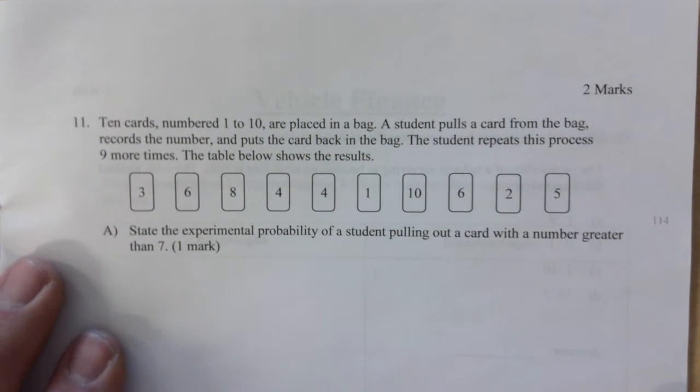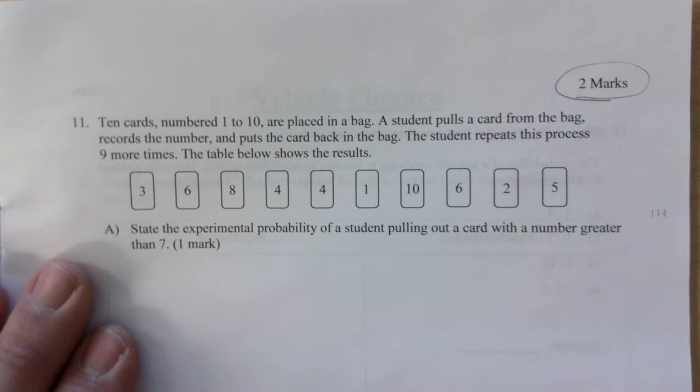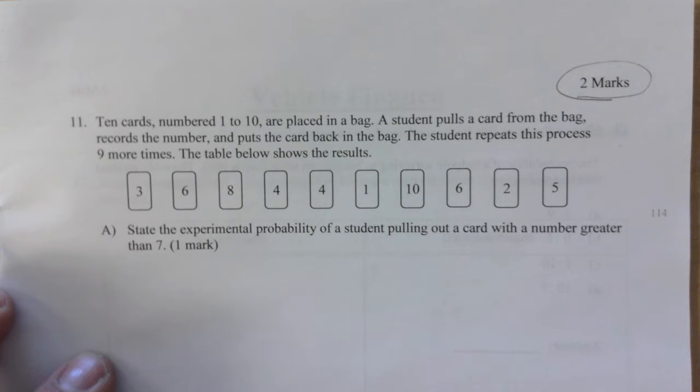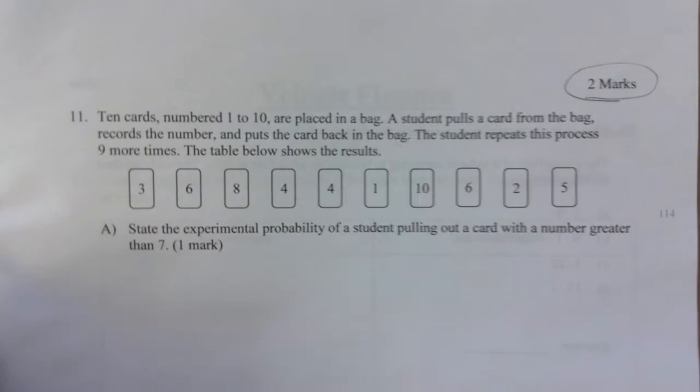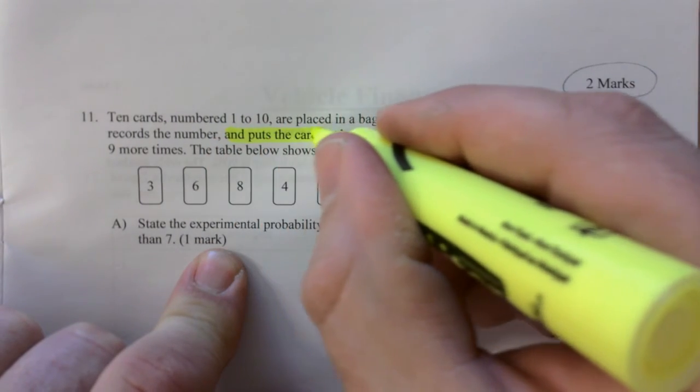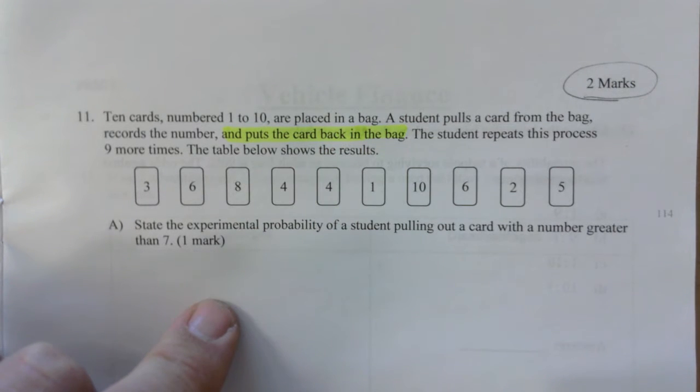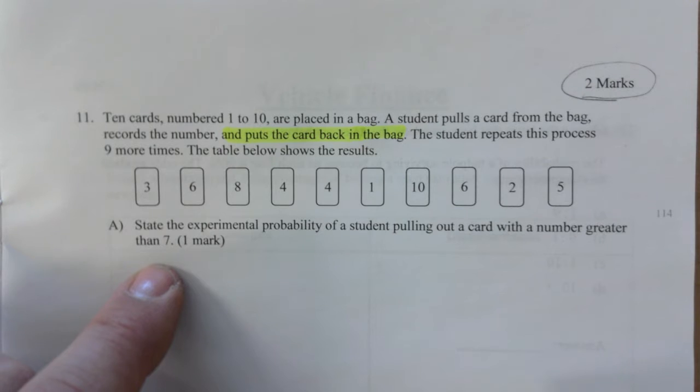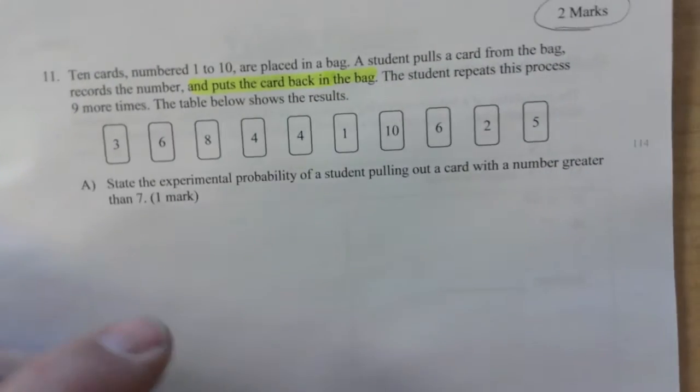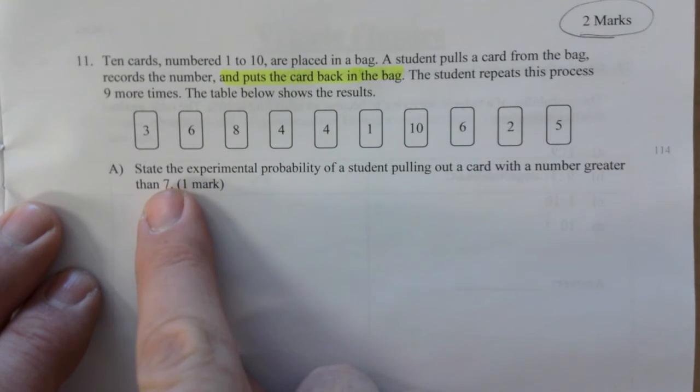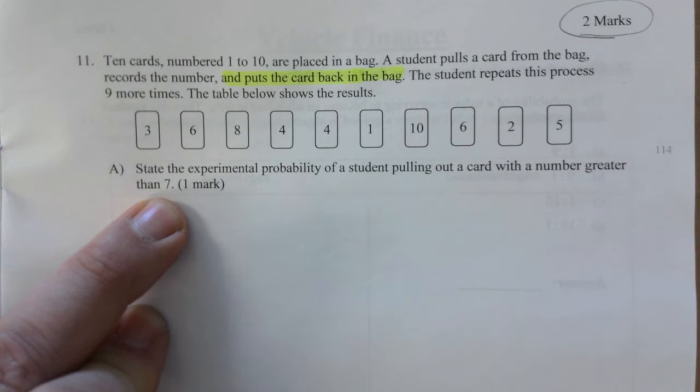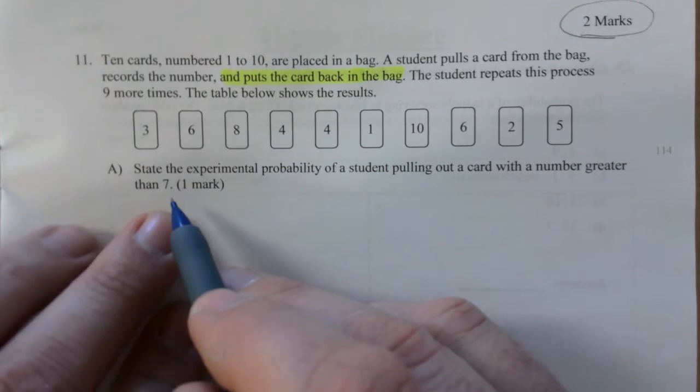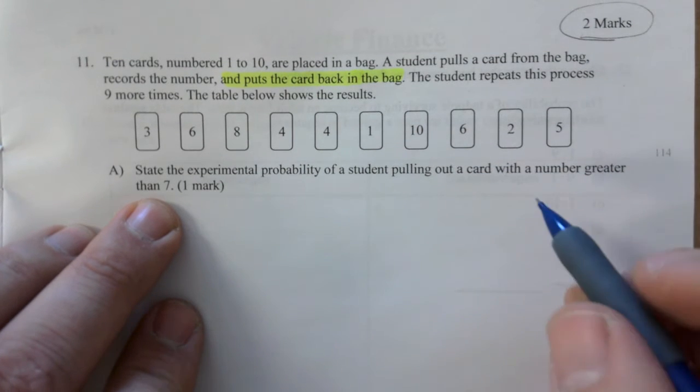Question 11, two marks. Ten cards numbered 1 to 10 are placed in a bag. A student pulls a card from the bag, records the number, puts the card back in the bag. I think that's important, because if it didn't then it would change our answer significantly. The student repeats this process nine more times. The table shows the results below. And so this is an experiment.